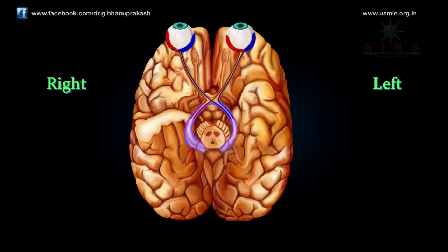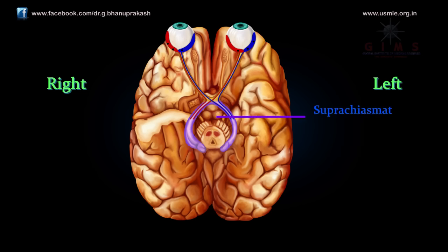Some axons of retinal ganglion cells extend to the superior colliculi, a paired structure on the roof of the midbrain. The superior colliculi help coordinate rapid movements of the eyes toward a target. Small bundles of optic tract axons also project to the suprachiasmatic nucleus in the hypothalamus. Cells in the suprachiasmatic nucleus are involved in the control of daily, or circadian, behavioral rhythms related to the light-dark cycle.